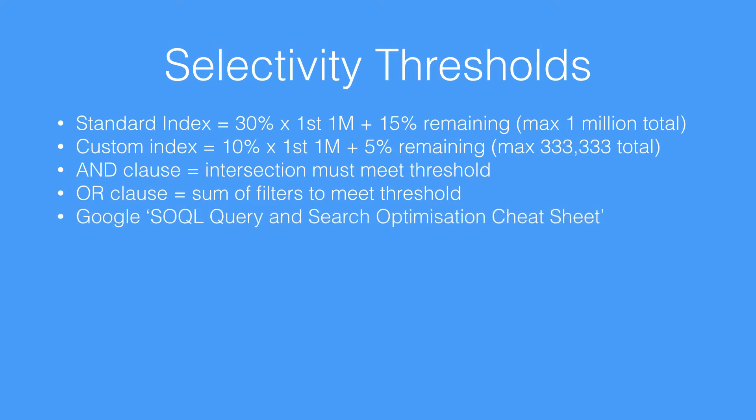If you search for the SOQL Query and Search Optimization Cheat Sheet on Google, there's a wonderful PDF that Salesforce has put together which goes through step-by-step all of these different selectivity thresholds. So when working with a query, you want to make sure that you're using an index field so that it selects the smallest amount of records possible with the most restrictive filter, so that the other filters can be applied on that set of records to then run in the most optimal manner.